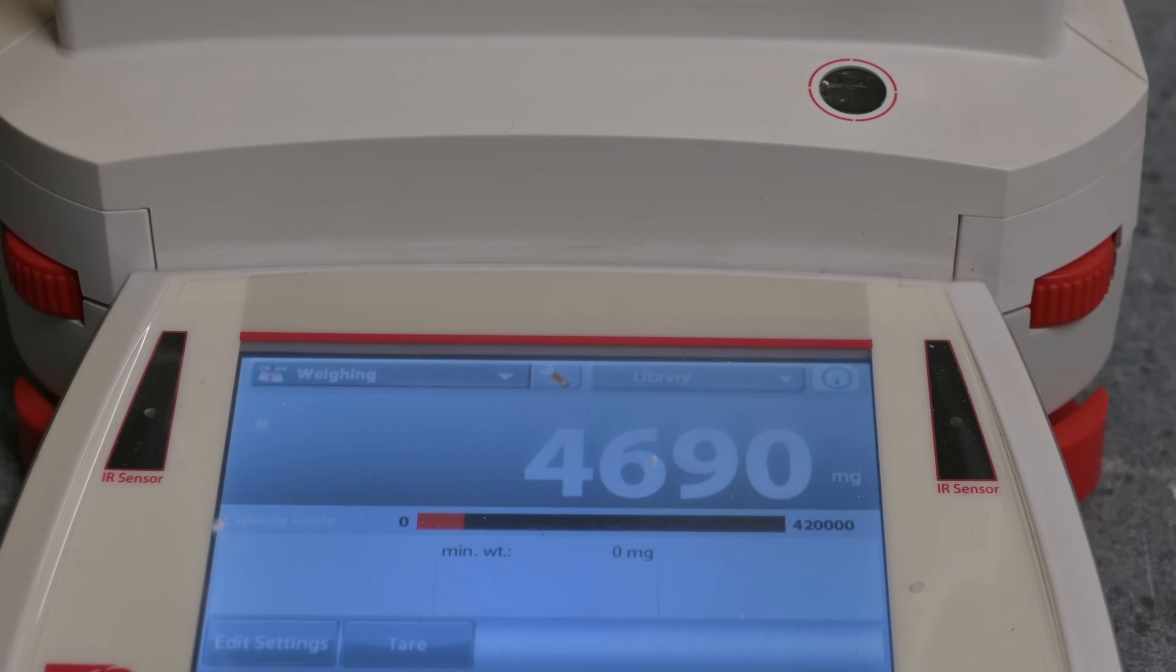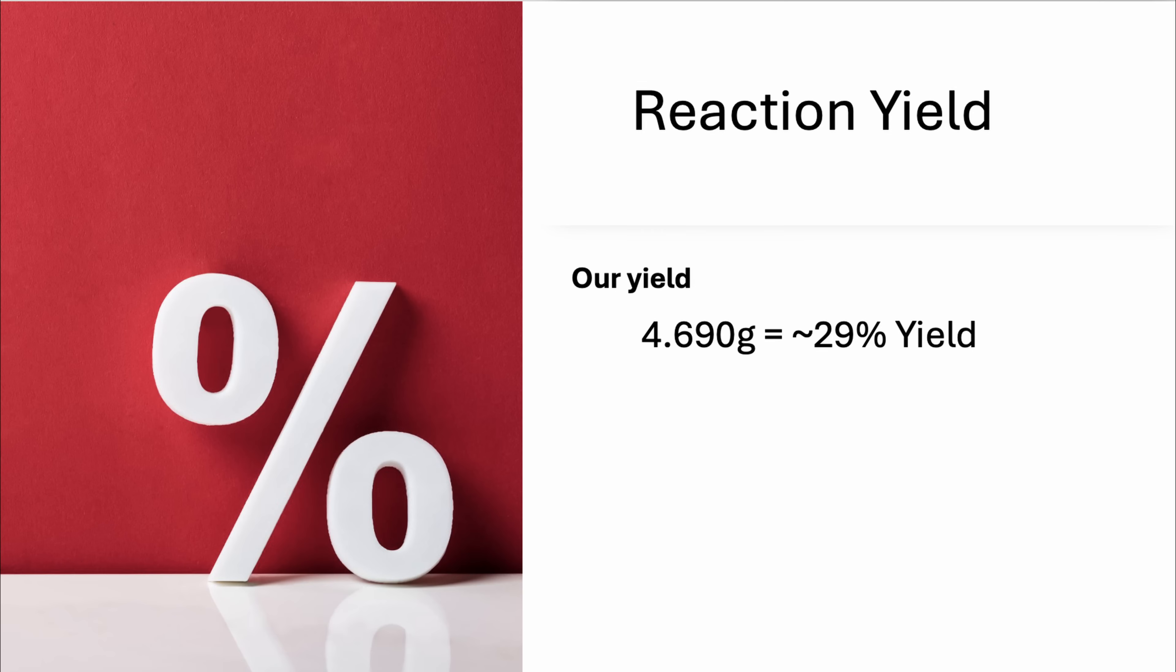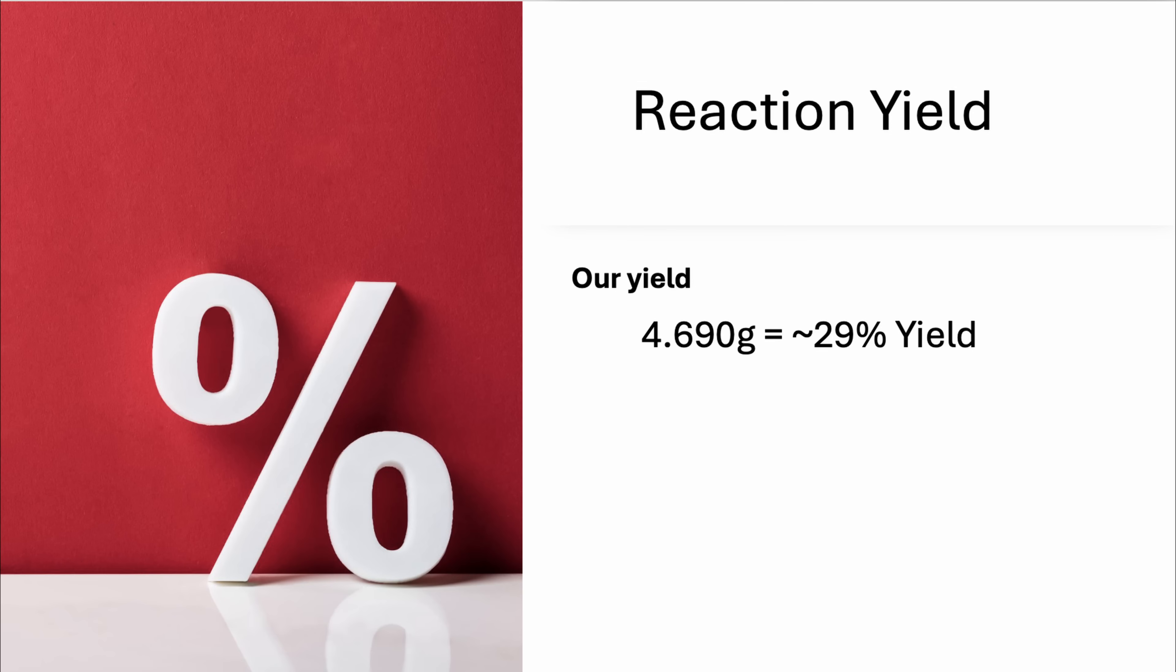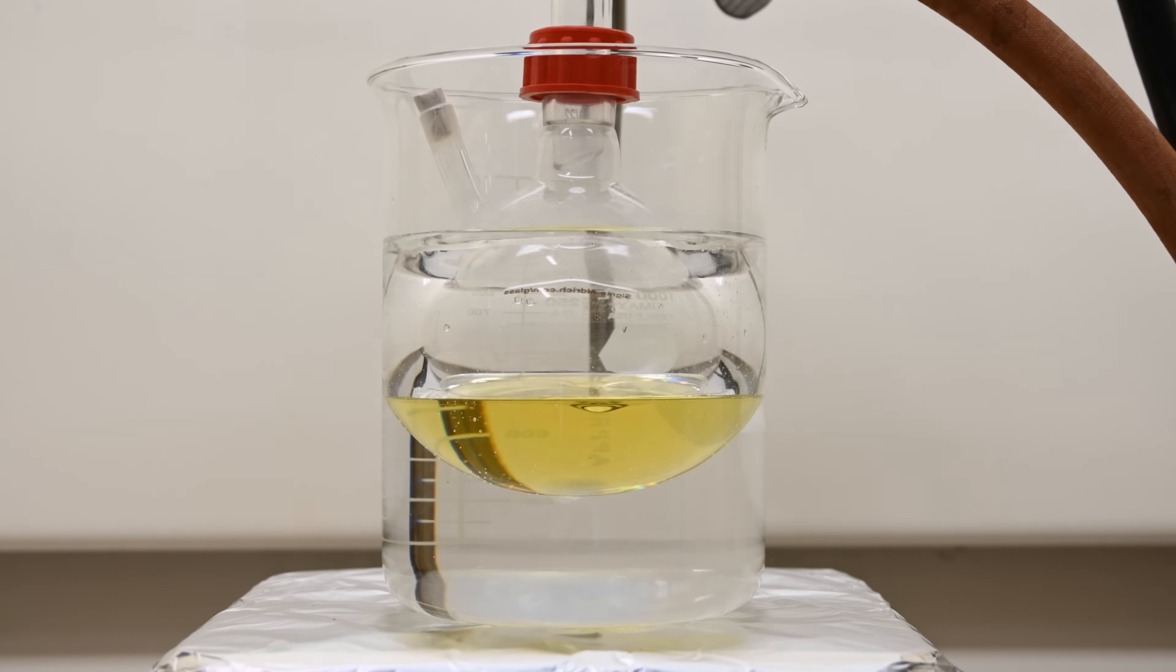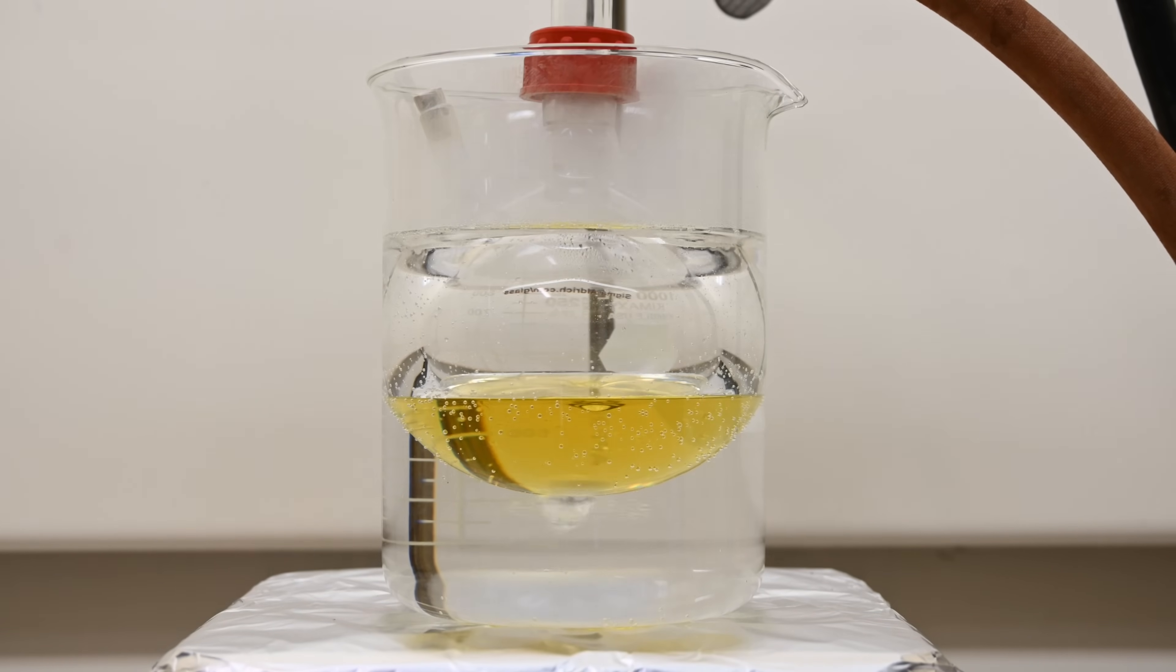This process yielded 4.69 grams of final dry crystalline product. So we ended up with just 29% yield. Not exactly Nobel prize material here, but all reactions are not perfect. Sometimes things get finicky. The expected yield was 11 to 13 grams, which would have been a 68 to 81% yield. So what went wrong here?